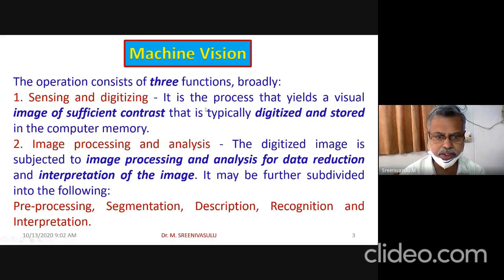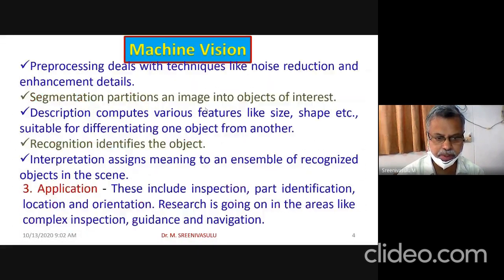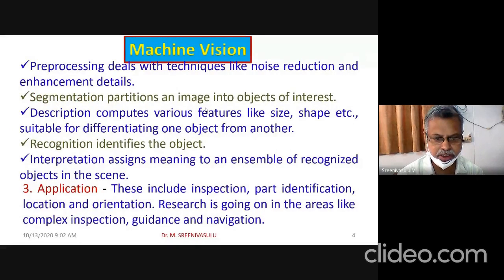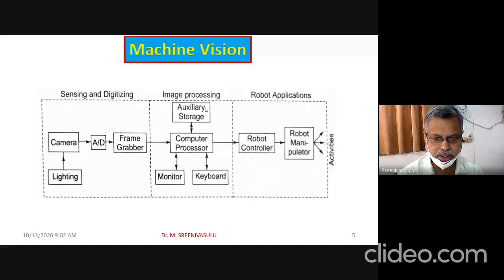There are three functions: sensing and digitizing, image processing and analysis, and applications. In image processing, you have pre-processing, segmentation, description, recognition, and interpretation. These are all the various stages that are associated with it.